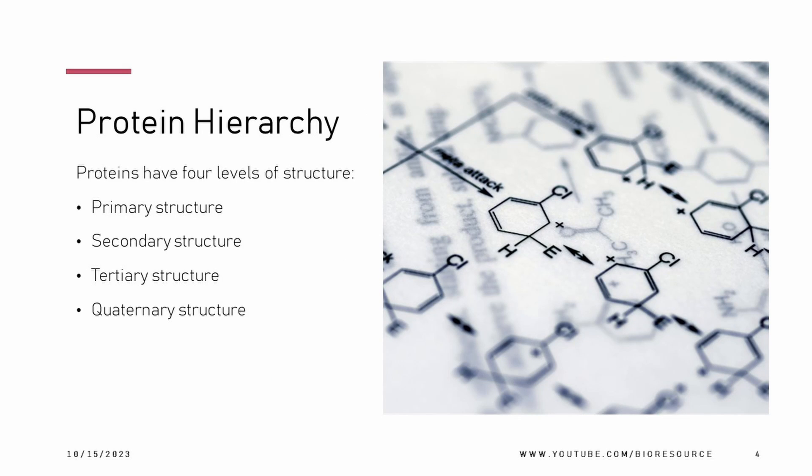Let's look briefly at the overview of protein structure hierarchy. Proteins have four levels of structure: primary structure, secondary structure, tertiary structure, and quaternary structure. The primary structure is its amino acid sequence. The secondary structure is the local arrangement of amino acids in the polypeptide chain, with the two most common types being alpha helices and beta sheets. The tertiary structure is the three-dimensional arrangement of secondary structures, determined by interactions between amino acids. The quaternary structure refers to interactions between multiple polypeptide chains.